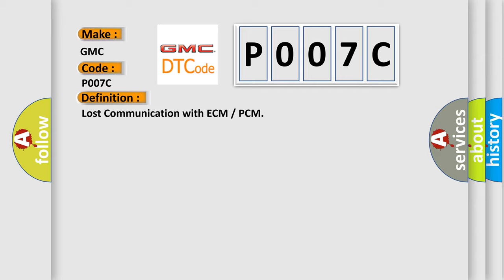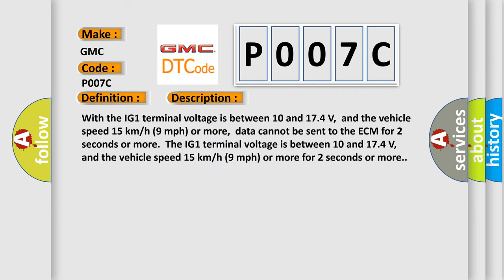And now this is a short description of this DTC code. With the IG1 terminal voltage between 10 and 17.4 volts, and the vehicle speed 15 km/h (9 mph) or more, data cannot be sent to the ECM for 2 seconds or more.